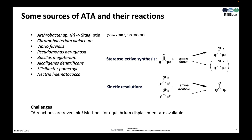Amine transaminases come from many sources and the most common is bacterial cells. The top example shows the enzyme that was used and engineered to produce the anti-diabetic drug sitagliptin by the companies Merck and Codexis. This work was published in Science in 2010 and describes impressive enzyme engineering work for a biocatalytic industrial process.